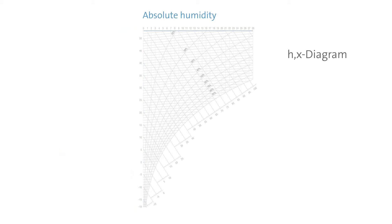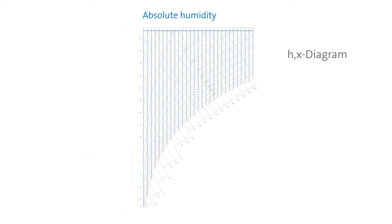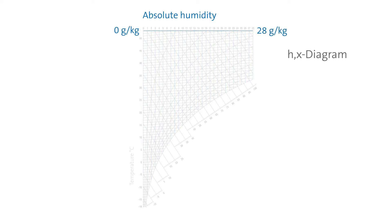The scale at the top describes absolute humidity in grams per kilogram and ranges from 0 to 28 grams of water per kilogram of air.